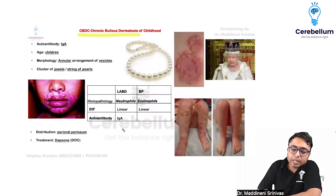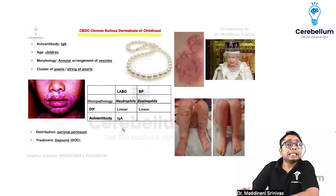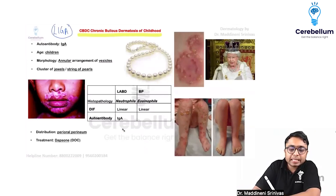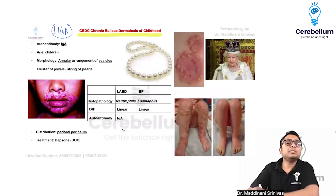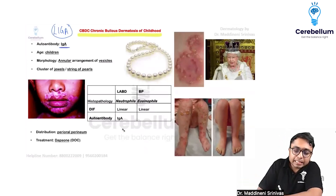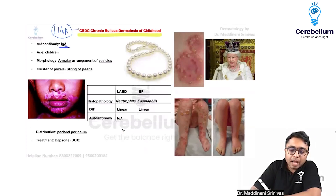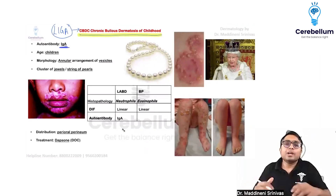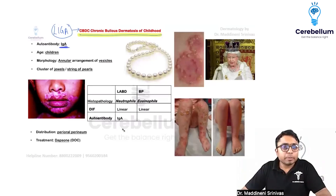Coming to the next sub-epidermal blistering disorder: CBDC. The other name of CBDC — Chronic Bullous Disorder of Childhood — is Linear IgA Disease. There was an MCQ which asked about the auto-antibody in Linear IgA Disease, and the answer is IgA. But examiners have evolved and are now asking in CBDC what the auto-antibody formed is, so we should also become more thorough.